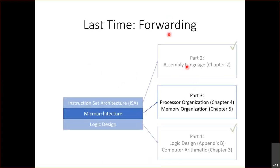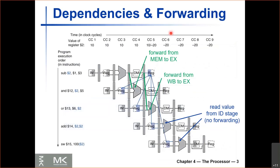Last time we spoke about forwarding. We saw how to handle forwarding in the pipeline, and we saw that when we have dependencies in our code — for example, a subtract instruction that writes to register 2 followed by AND and OR instructions that read from register 2 — the write to the register file takes place after cycle 5, whereas AND and OR want to read from the register file on cycle 2 and cycle 3. So obviously we cannot read from the register file before it is written on cycle 5. The way we dealt with this is by forwarding.